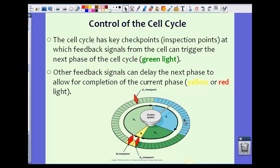Other feedback signals can delay the next phase to allow for completion of the cell cycle. If, for example, there was something that happened in these particular phases that the cell knew at these checkpoints that weren't finished, then it wouldn't allow the continuation of the cell to replicate, either replicate its DNA or grow bigger. These are the checks and balances to make sure the cell is doing the right thing.